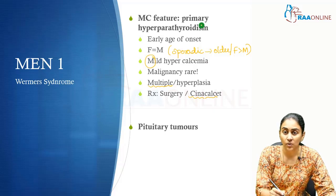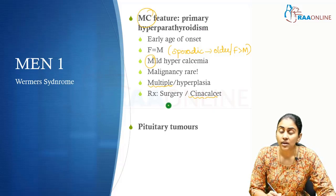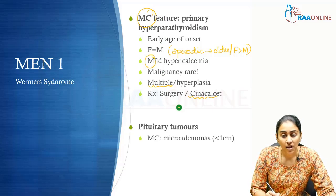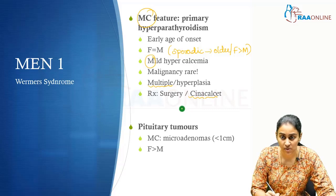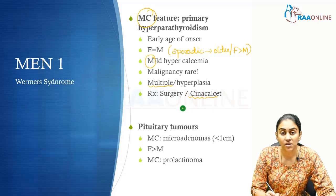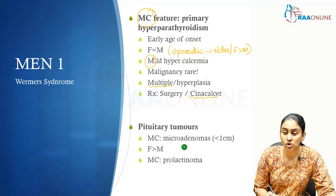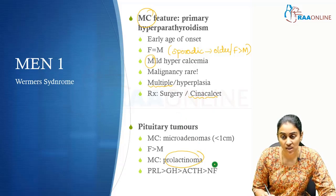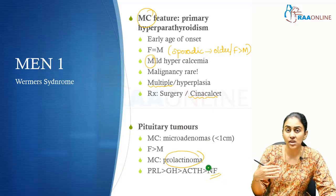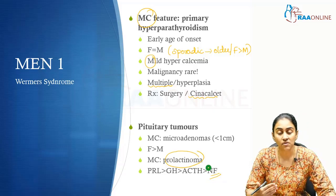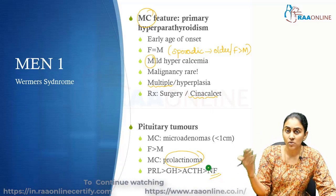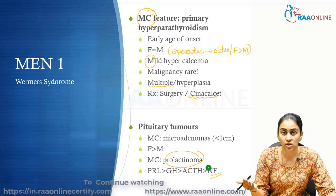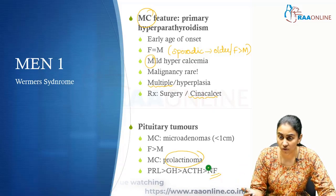The least common in the triad is pituitary. Amongst pituitary tumors, those more commonly associated with MEN 1 are usually micro-adenomas — less than one centimeter — with a female predisposition. Amongst hormone-secreting pituitary tumors, the most common hormone hypersecretion associated with MEN 1 is prolactin hypersecretion. In descending order of occurrence: prolactinomas, followed by acromegaly due to growth hormone-secreting somatotroph adenomas, then Cushing's disease from ACTH-producing adenomas, and finally non-functioning pituitary adenomas.